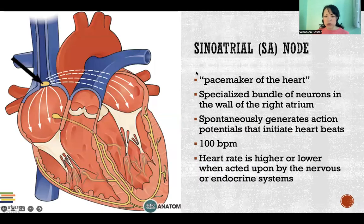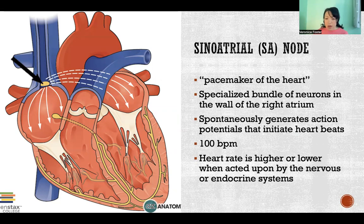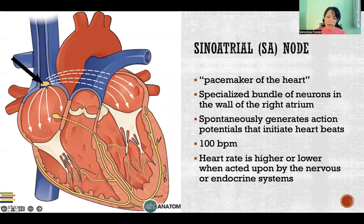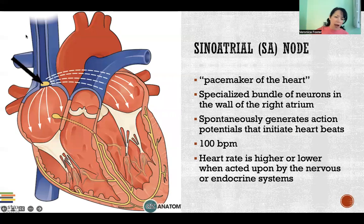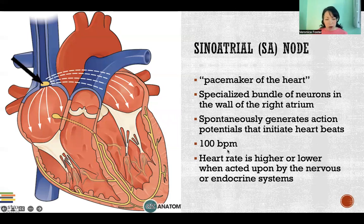So first, the sinoatrial node is referred to as the pacemaker of the heart because it is the beginning of the conduction system of the heart and is what is controlling the contractions of the heart. It's located here where this arrow is pointing, way up at the top. It's a specialized bundle of neurons in the wall of the right atrium, right at the entry point of the superior vena cava. It spontaneously generates action potentials that initiate heartbeats.